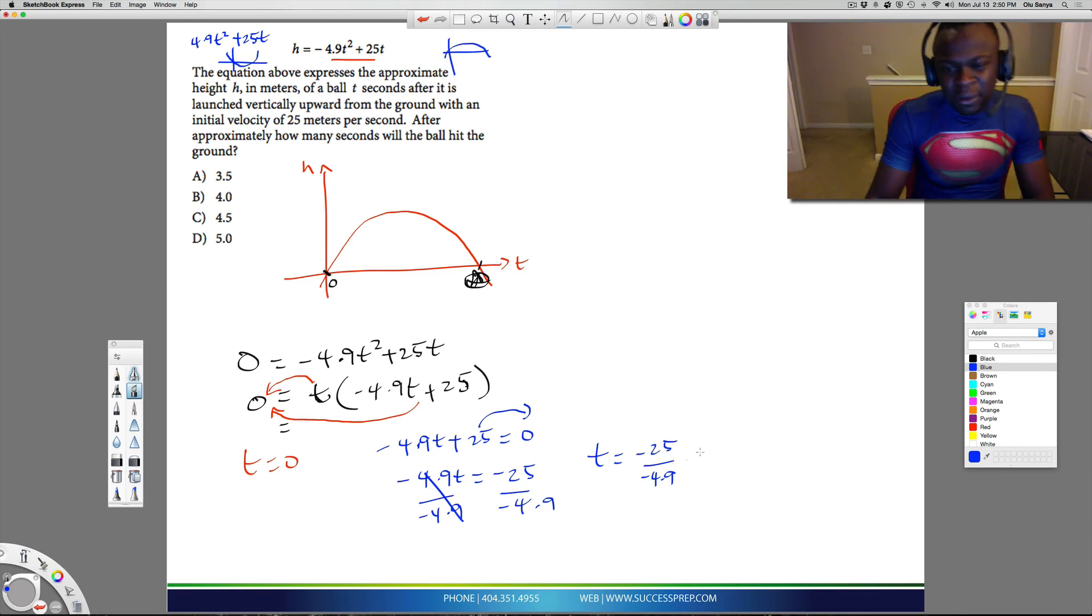This section will be a calculator section on the test. So go ahead and type that in your calculator. And that would be 5.10. So it's going to, it's at about 5 seconds, 5.10. So about 5 seconds or so, this stuff will land on the ground again. And that would be around here about 5.1 seconds. If you look at the answer choices, the question did say after approximately. So that means they're allowing us to round this number a little bit because they used approximately in the question. So the answer here will be D. The answer will be D.